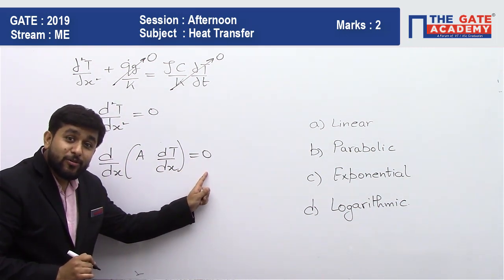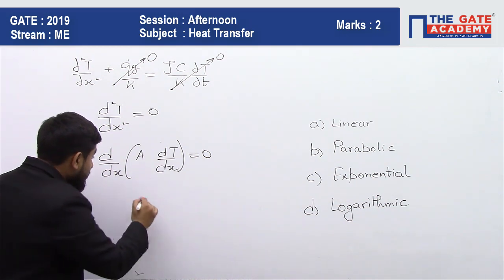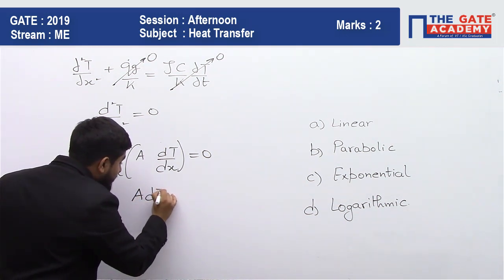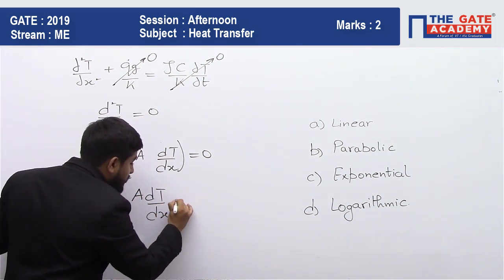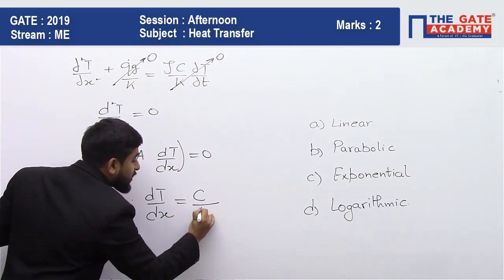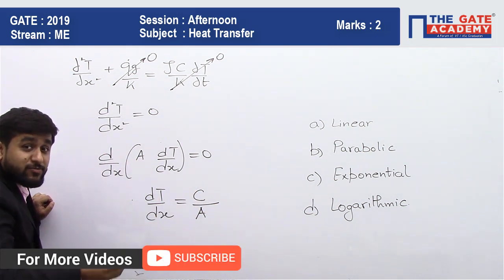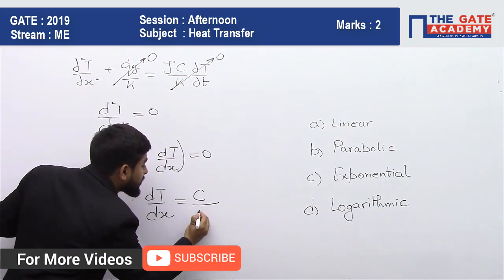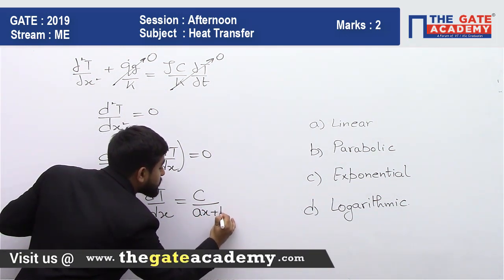Now derivative of something is zero, so that something will be a constant. So your a dt by dx is going to be a constant. Now you can take your a on the other side and a is a linear function of x which is given in the question. So let me write it as a linear function, ax plus b.